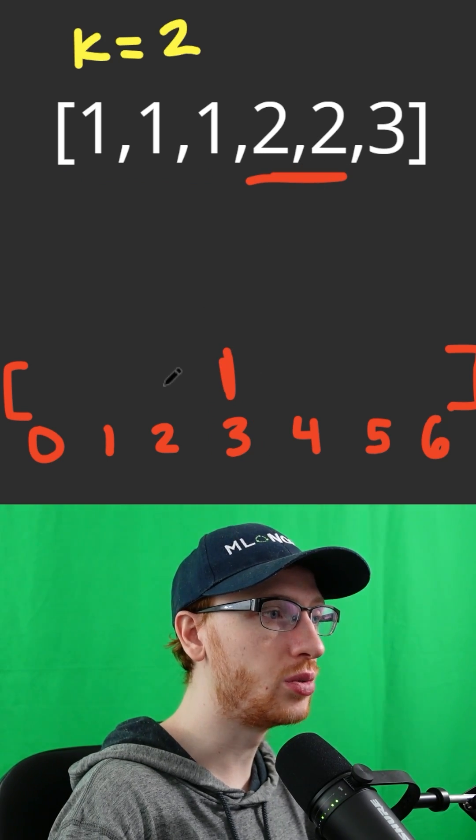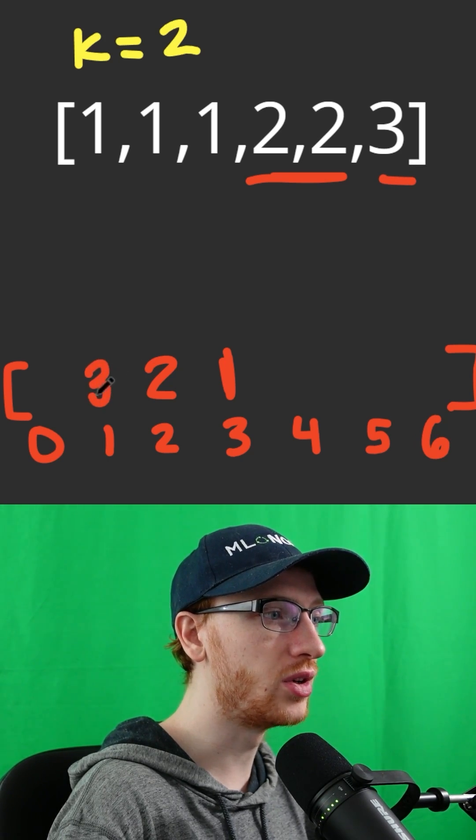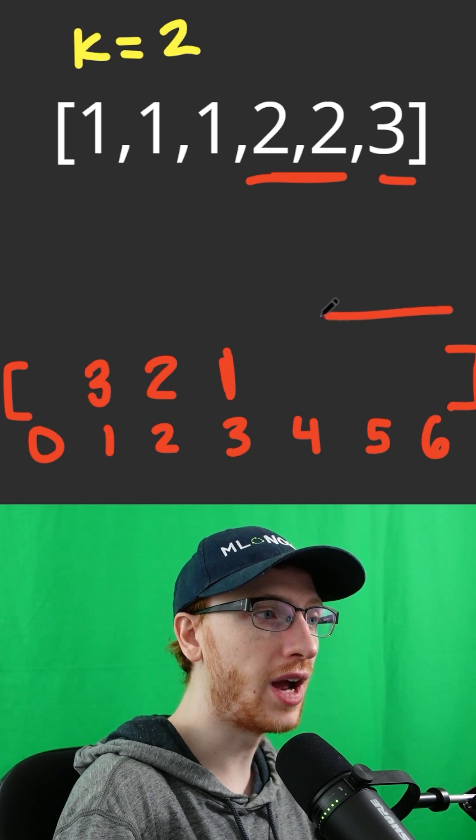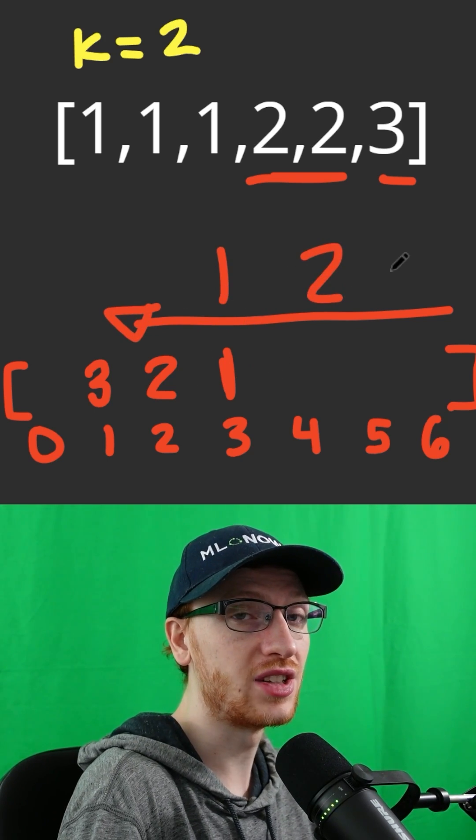We have two 2s, we would put 2 where the frequency is 2, and we have one 3, so we would put that 3 in the frequency of 1. We can simply go backwards through the array and pick up the top k numbers. We'll get 2, and that's our answer.